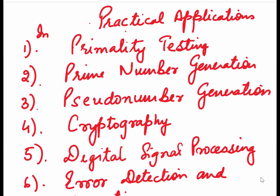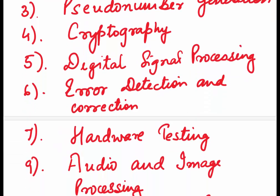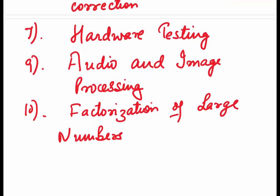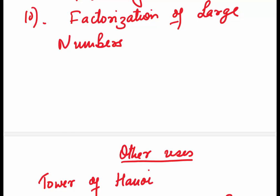Let's look at some practical applications of Mersenne numbers. They are used in primality testing, prime number generation, pseudo number generation, cryptography, digital signal processing, error detection and correction, hardware testing, audio and image processing, factorization of large numbers. There are so many other applications.